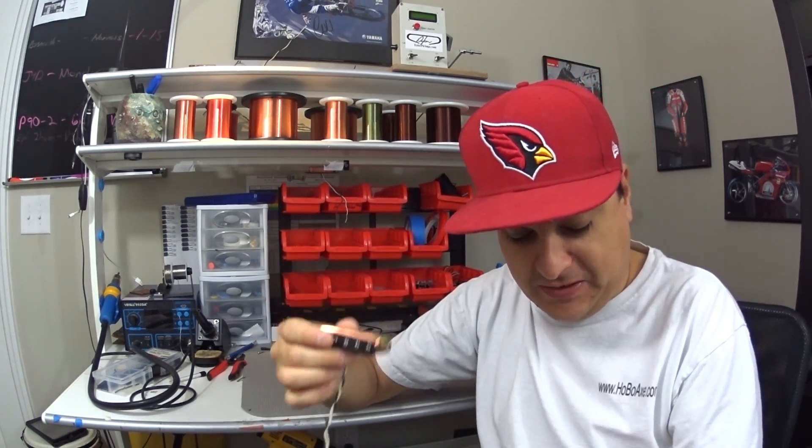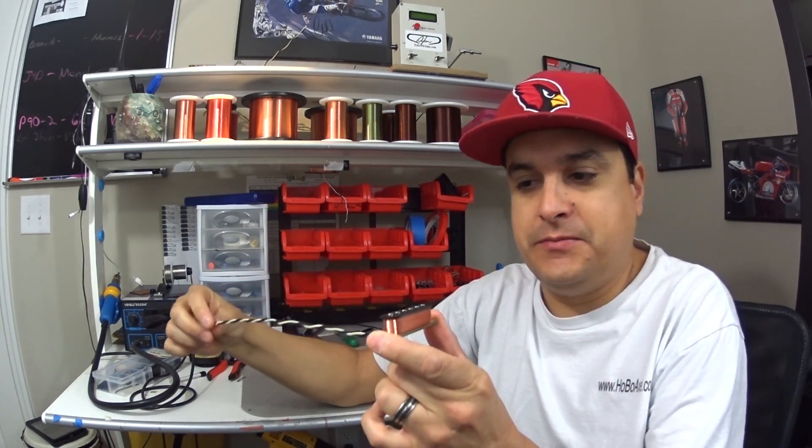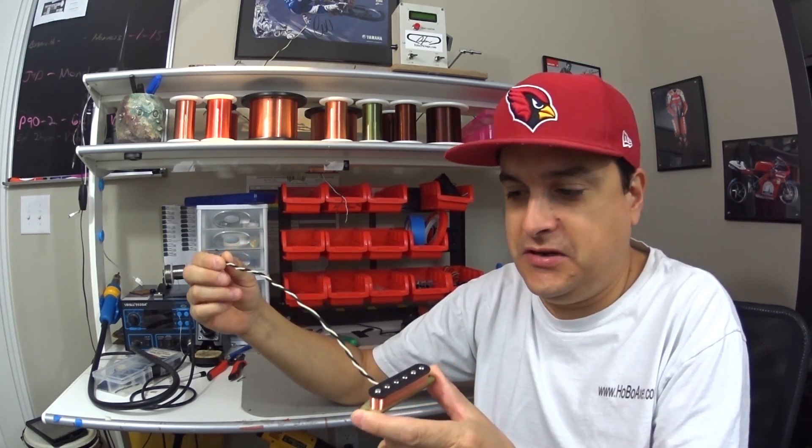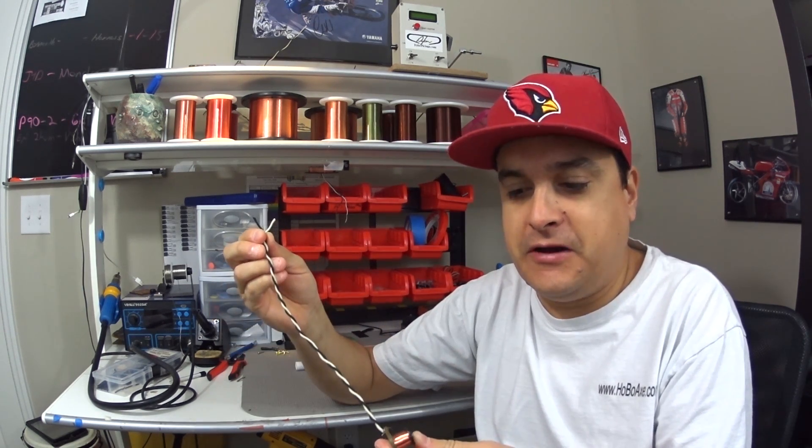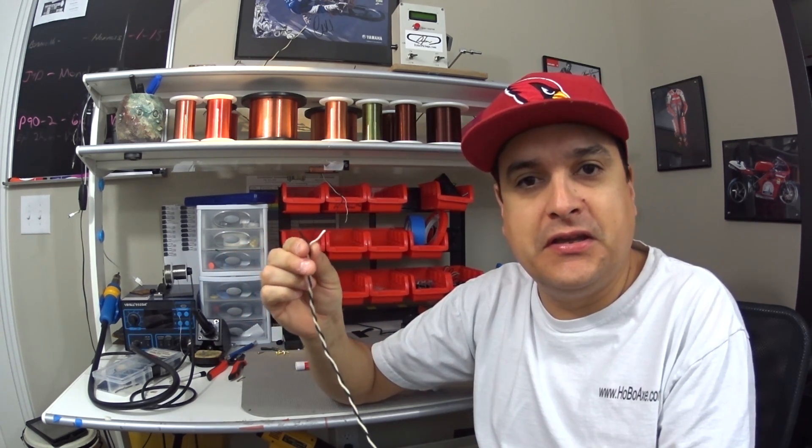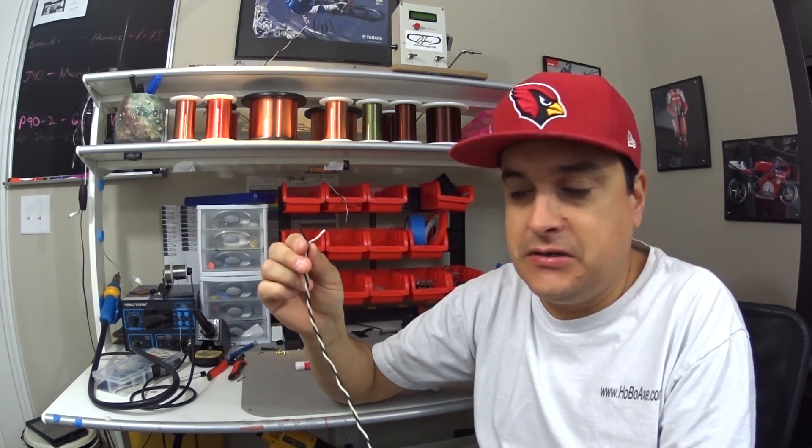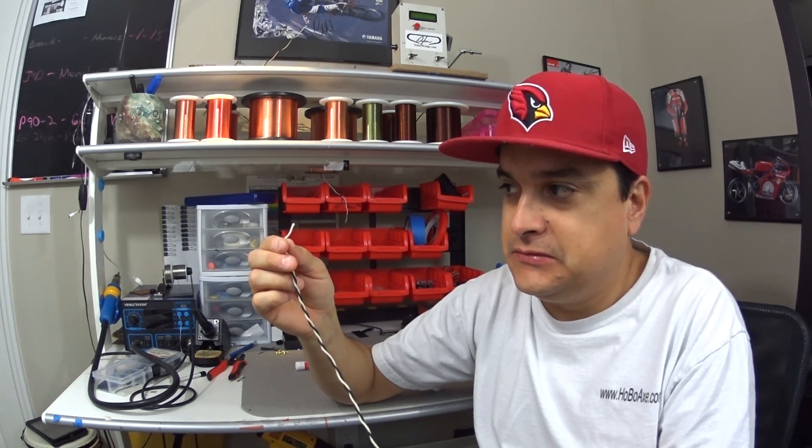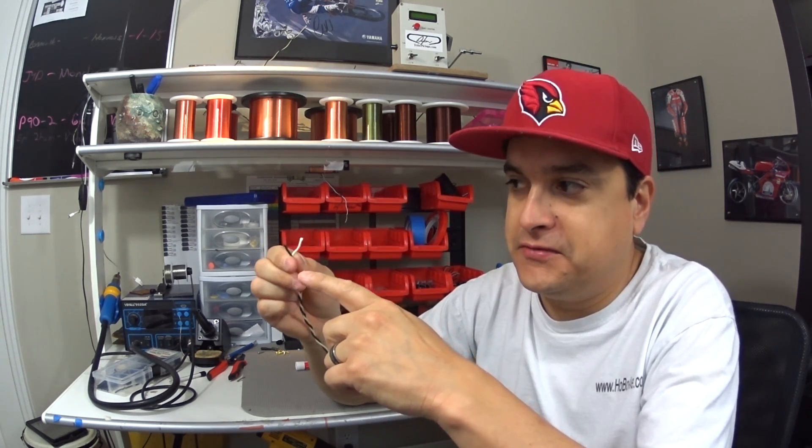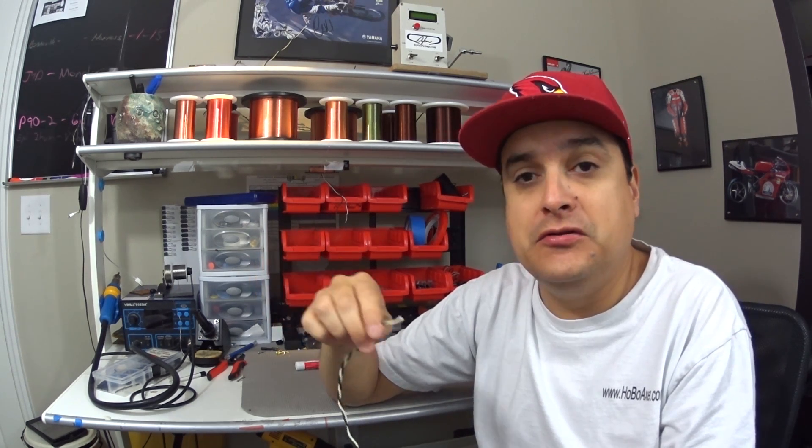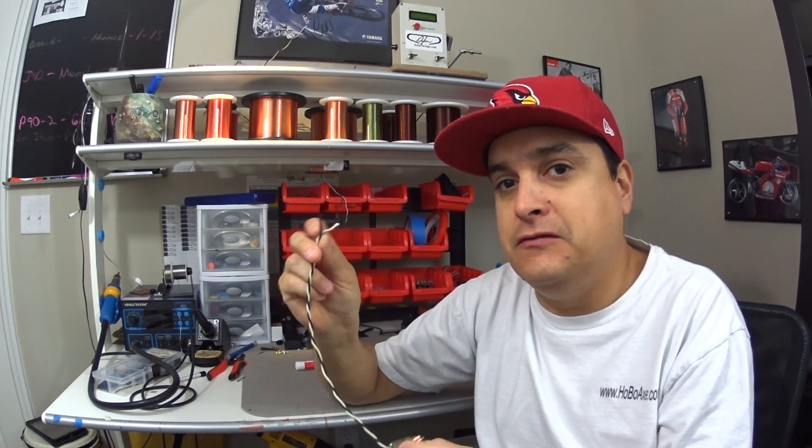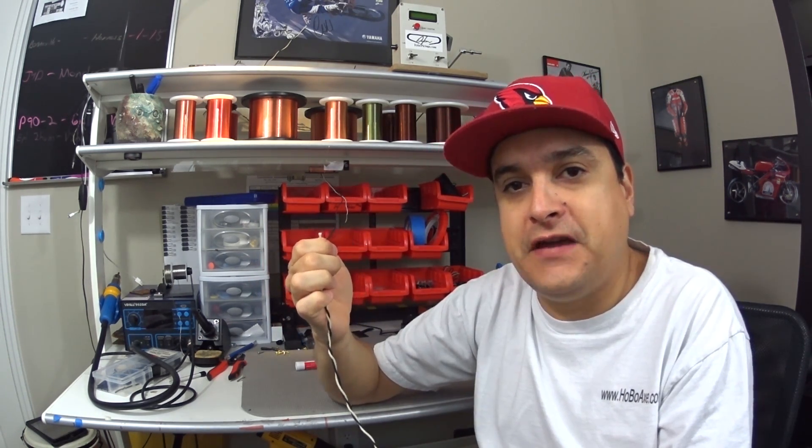So we have right here a Stratocaster pickup. This is the easiest way to illustrate it. We have a black and a white wire coming out of the back. If you plug in your neck pickup with the black going to the ground and the white going to the output, and then you take your bridge pickup and you flip them, they'll be out of phase.